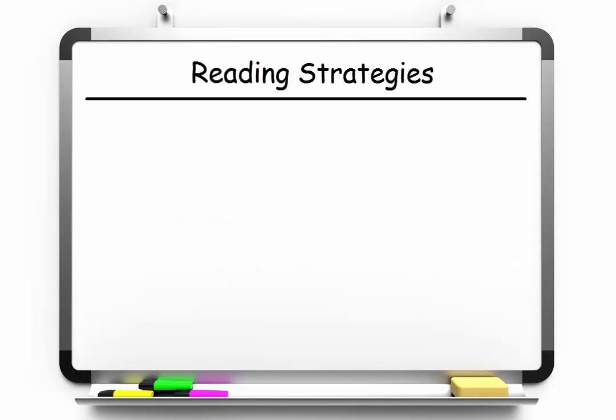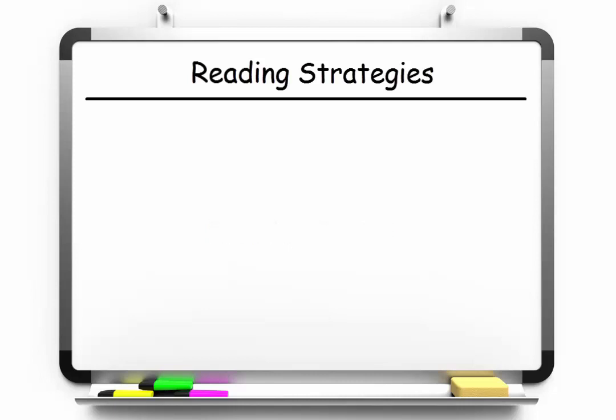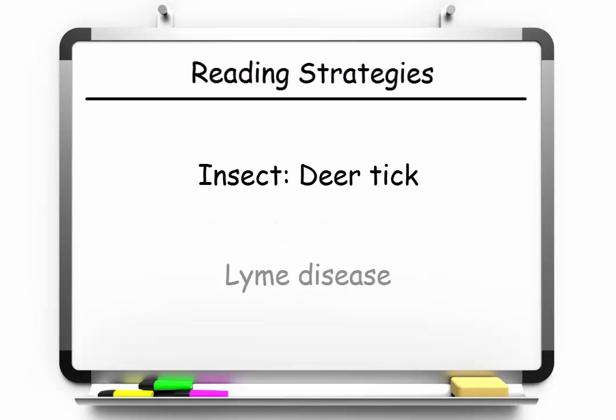Now let's read an excerpt from part four. Then we'll look at one of the questions. This passage discusses the problems in dealing with an insect called the deer tick, which causes Lyme disease. And just remember, on the real test, you won't hear any of the readings — you'll just see them.